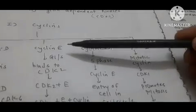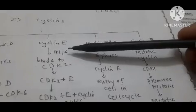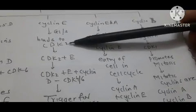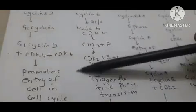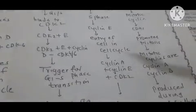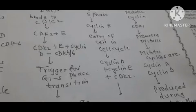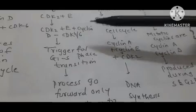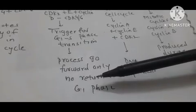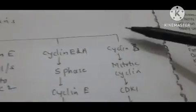The second set of events occur due to the presence of Cyclin E, which participates in the transition phase between G1 phase and S phase. Cyclin E binds with CDK2, and this CDK2-Cyclin E complex then forms a larger complex with CDK4, CDK6, and Cyclin D. This more complex arrangement triggers the transition from G1 to S phase, and the process moves forward without returning to G1.